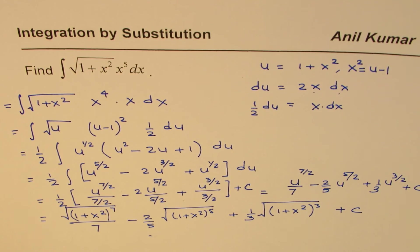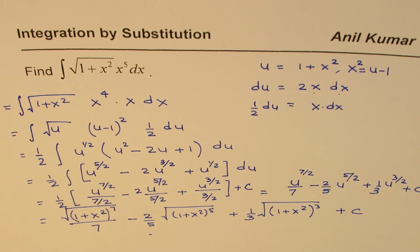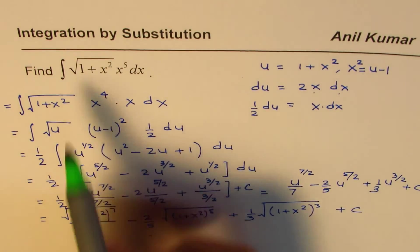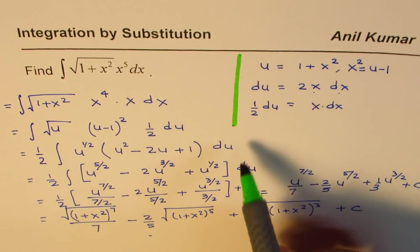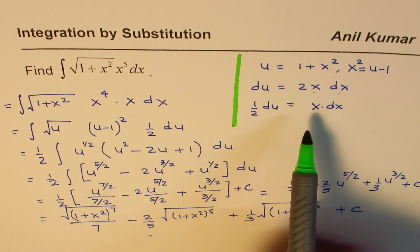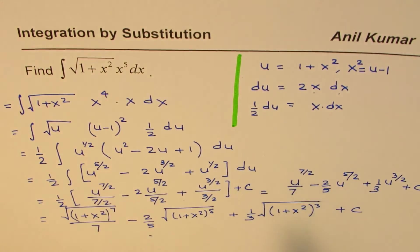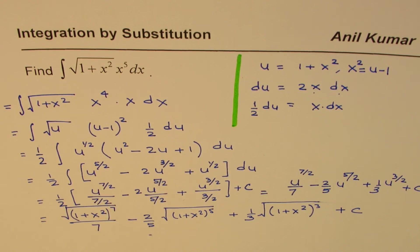I hope the steps are clear to you. So the idea is: begin with the complicated part of the function, substitute a variable, find its derivative, and see how things can fit in and then move on.